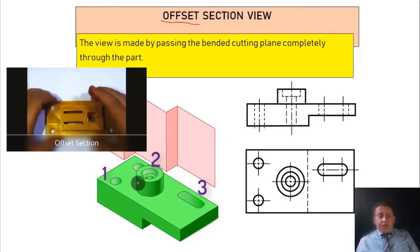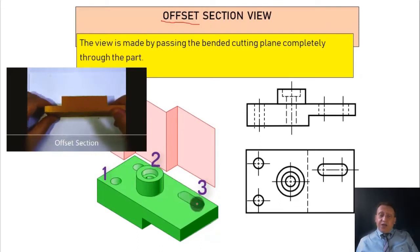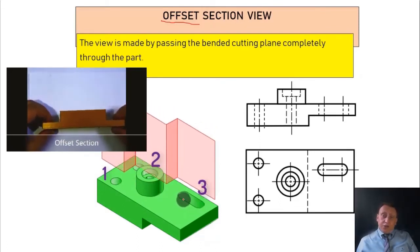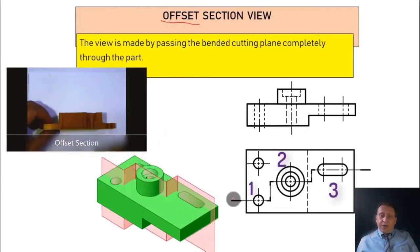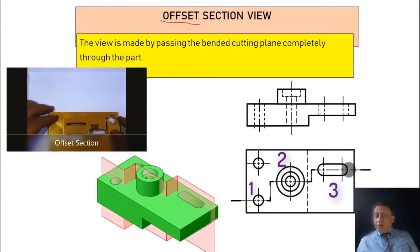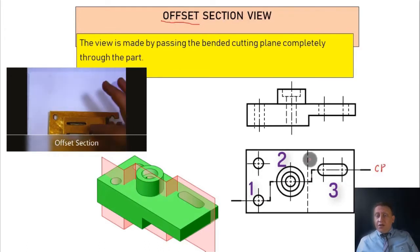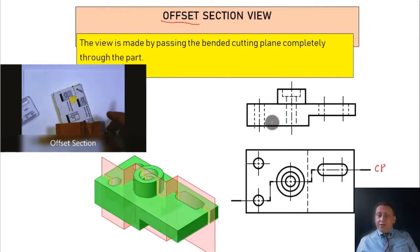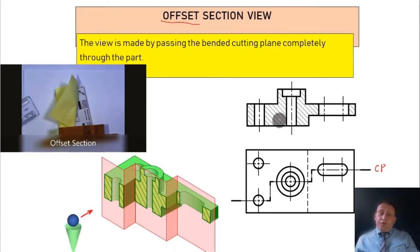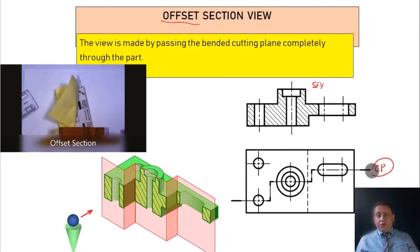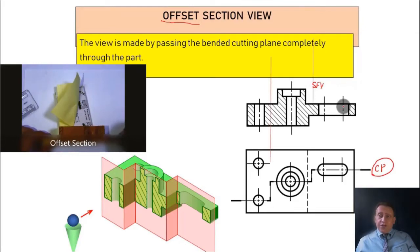In the example shown in green, I have three features: a small hole, a cylinder with a hole, and a slot. What I did is bend the cutting plane line through these three features. In the top view, the cross section passes through all three features — one, two, and three. Then remove the front part that you cut and look at the features from inside, replacing hidden lines with visible lines. This gives you the section front view showing all three features.